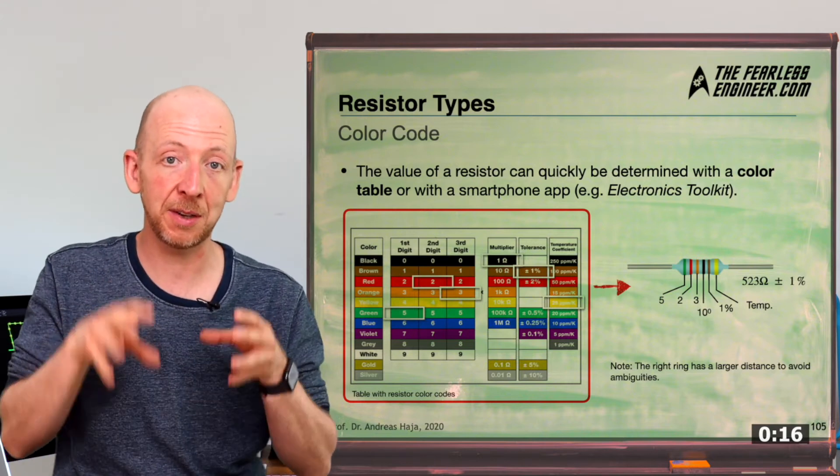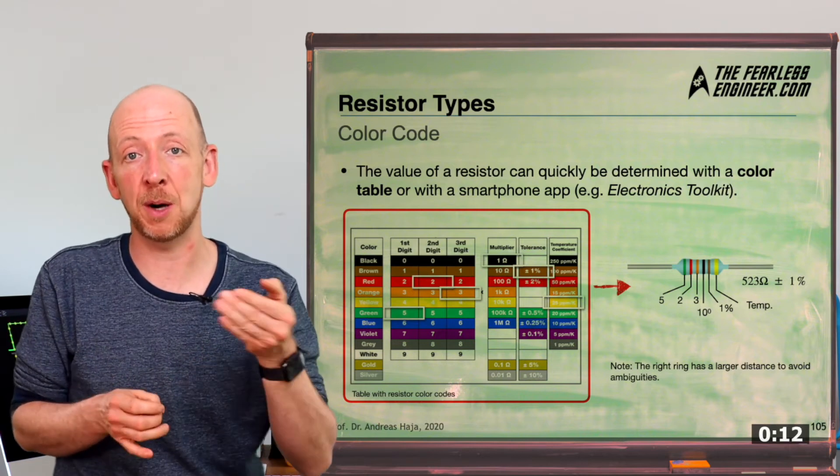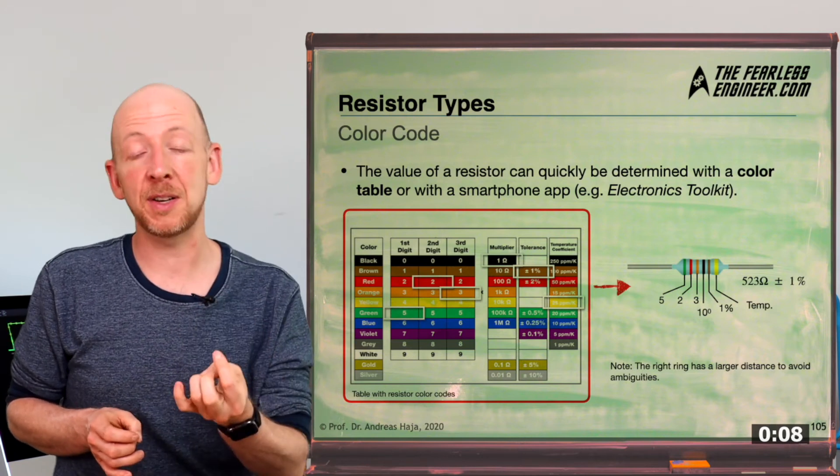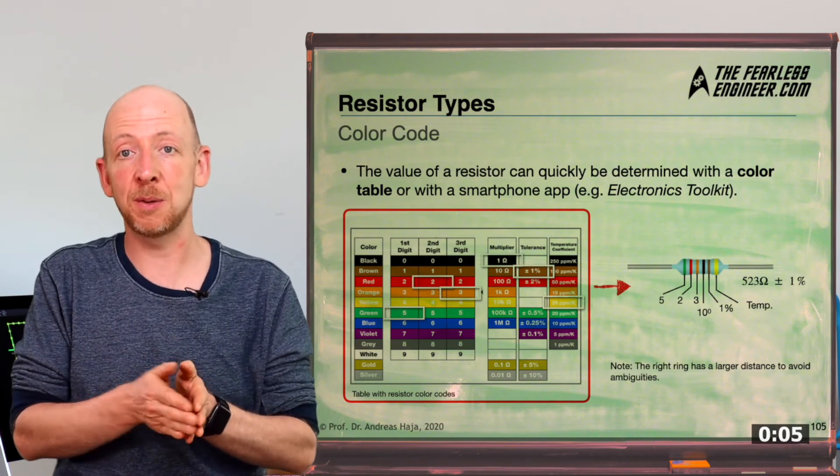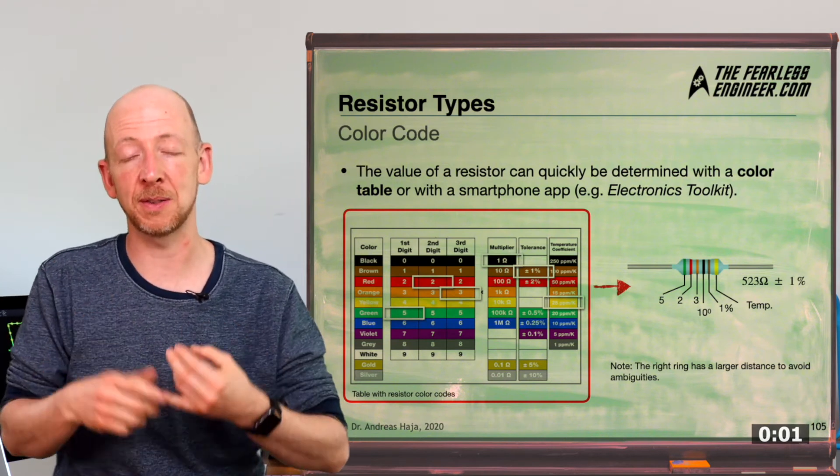And also, maybe one last thing here, a note on color codes. With most resistors, the reading direction is determined by one of the outer rings. It's always read left to right, and the right ring can be recognized most often by the fact that it has a larger distance to the other rings. It's set a little bit apart from the others, which makes it unambiguous in most cases.